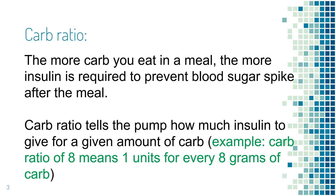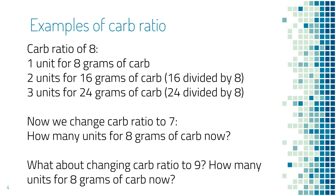For example, a carb ratio of 8 means giving one unit of insulin for every 8 grams of carb. If the carb ratio is set to 8, the pump gives 1 unit for 8 grams of carb (8÷8=1), 2 units for 16 grams (16÷8=2), and 3 units for 24 grams (24÷8=3). The pump divides the carb number by the carb ratio number to get the insulin amount.